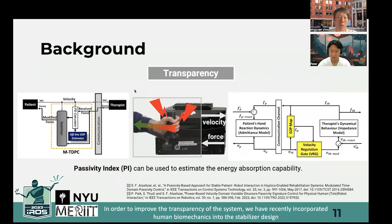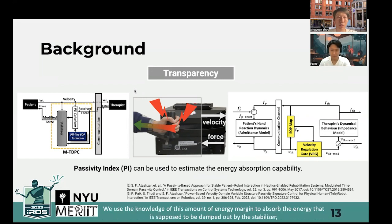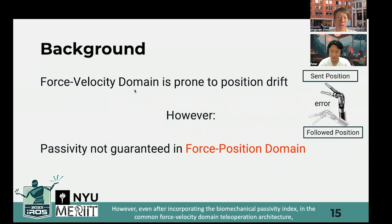In order to improve the transparency of the system, we have recently incorporated human biomechanics in the stabilizer design. When designing the stabilizer architecture, the energy absorption capability of the human, which is related to the passivity index, is taken into account. We use the knowledge of this energy margin to absorb the energy that is supposed to be damped out by the stabilizer, resulting in less activations of the controller and thus better system transparency. However, even after incorporating the biomechanical passivity index in the common force-velocity domain, the system is susceptible to position drift.